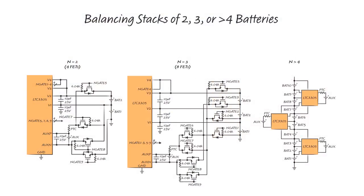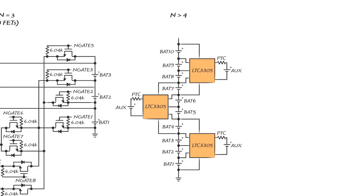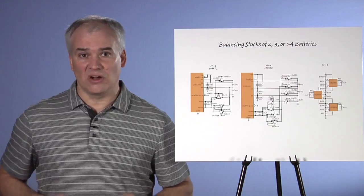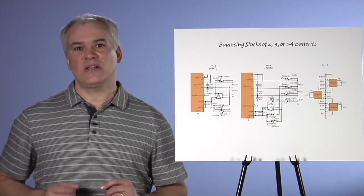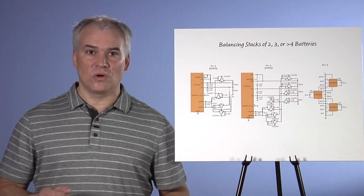A single LTC 3305 can be used to balance stacks of two, three, or four lead acid batteries. For stack heights greater than four, individual LTC 3305s can themselves be stacked, and interleaving allows for balancing every battery in a high voltage stack up to hundreds or thousands of volts. Stacks composed of 6 volt or 12 volt nominal batteries are supported, and balancing can take place independent of whether the stack is being charged, discharged, or at rest.